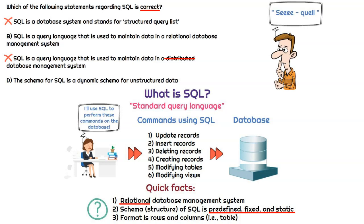For the last option: 'The schema for SQL is a dynamic schema for unstructured data.' Schema — however you pronounce it — means the structure of the database. With SQL, it has to be on a structured database, not an unstructured one, because this query language relies on structure and consistency. It has to be fixed, static, and predefined. If that's not the case, SQL as a language won't work properly and the commands won't mean anything. So that option is incorrect.